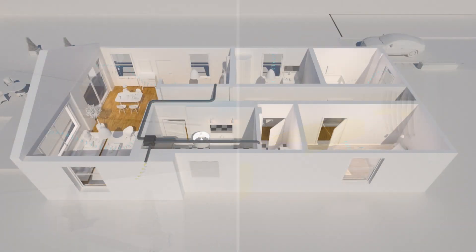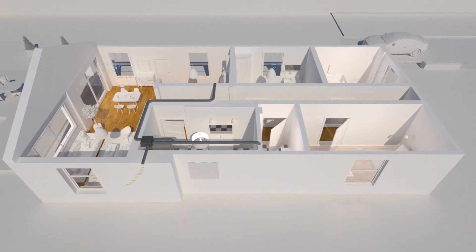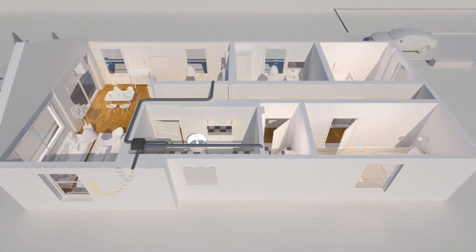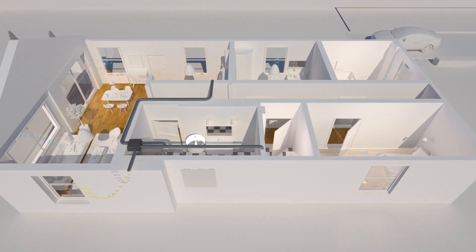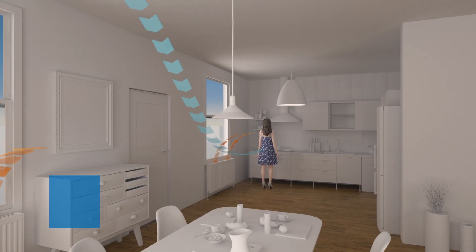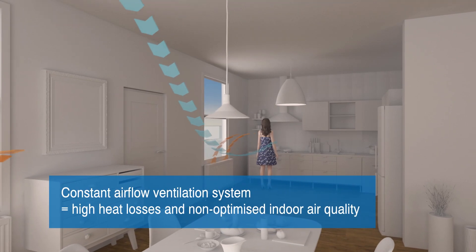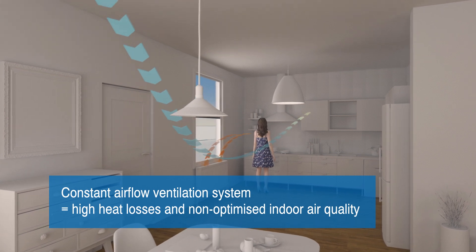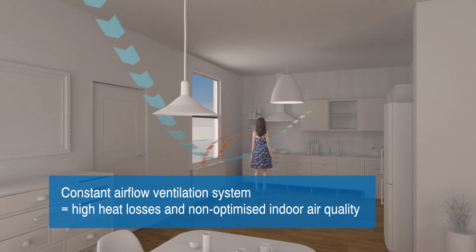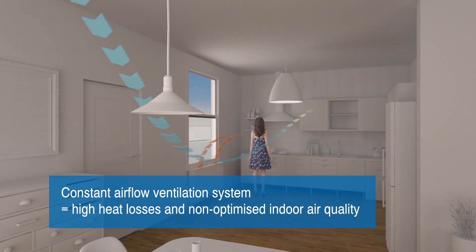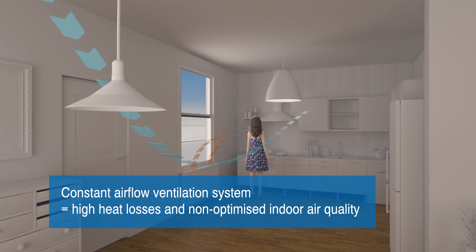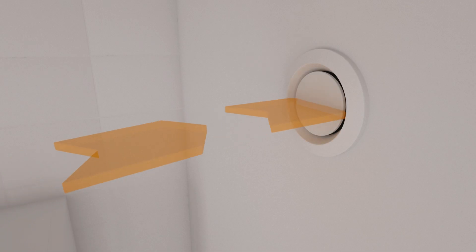Traditionally, ventilation systems operate on the basis of a constant air flow. On the one hand, these systems cause unnecessary energy losses when housing is little occupied. On the other hand, the air exchange may be insufficient in rooms where activity and pollution are high.